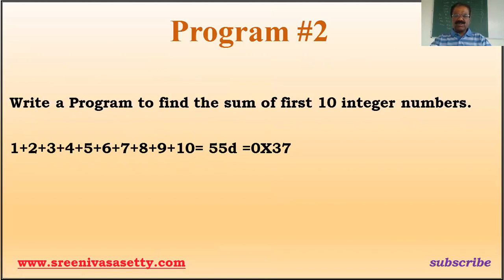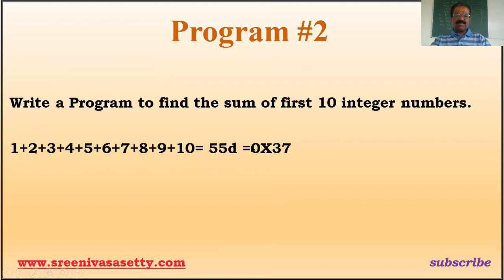The computer stores every piece of information in binary, but at the time of display it is shown in hexadecimal. So 37 hexadecimal is the output of this particular program. Therefore I have to add from 1 to 10 and store the result in an appropriate memory location.